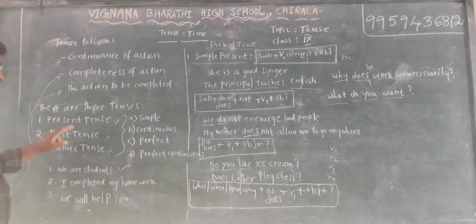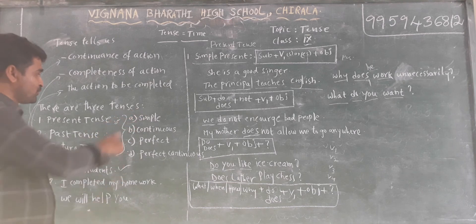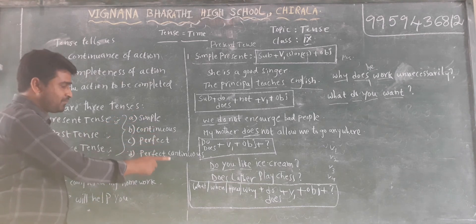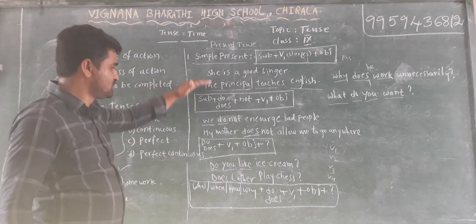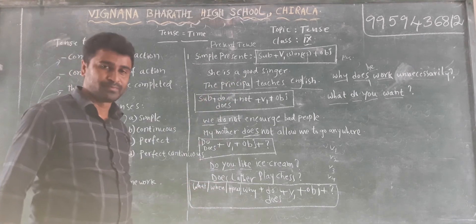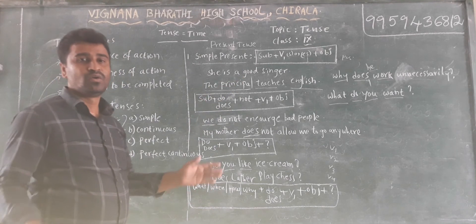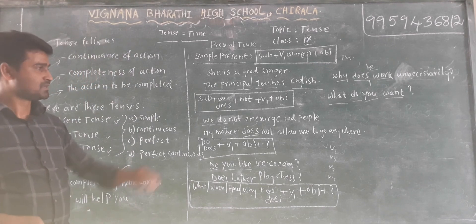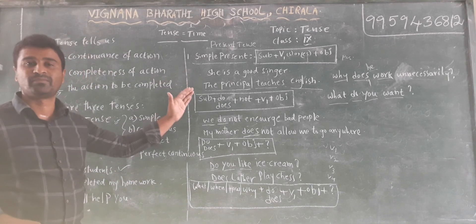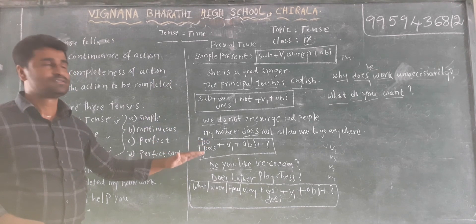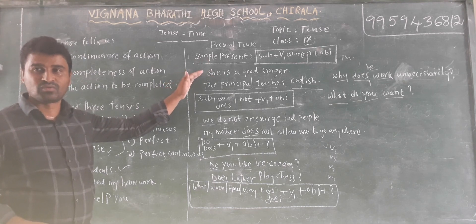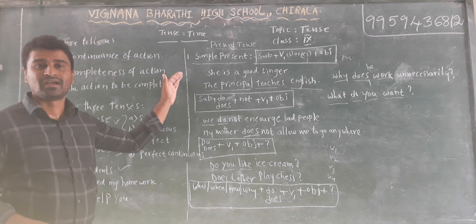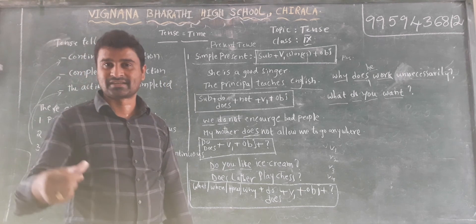Simple present tense structure: Subject + V1 + Object. Negative: Subject + do/does + not + V1 + Object. I ask you to write some sentences — some positive sentences, some negative sentences, some interrogative sentences regarding simple present tense. Do you understand? We shall meet in the next class. Thank you.